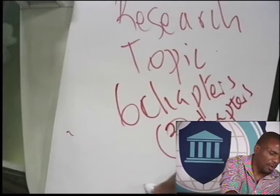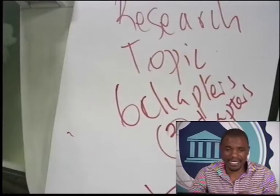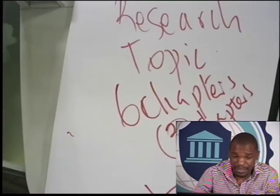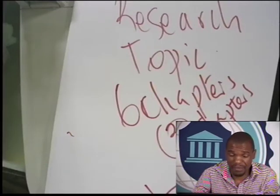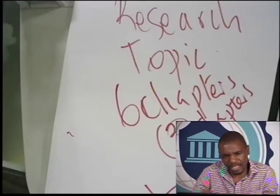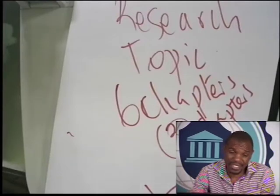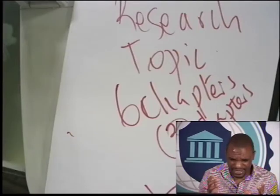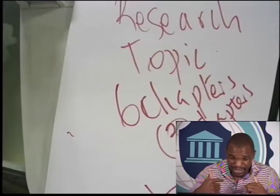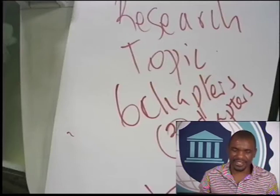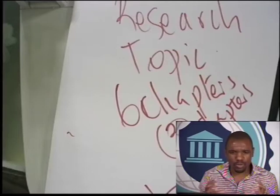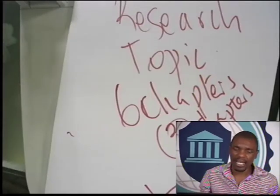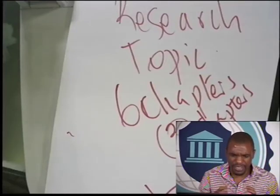Our research has six chapters in total. In your proposal, you are required to do three chapters: chapter one, two, and three. Chapter one is the introduction and background of the study. Chapter two is your literature review. Chapter three is your research methodology. So when we talk about a research proposal, we focus only on those three chapters. First you give me your research topic, then once we have agreed on it, we start discussing how you are going to put together your research proposal.